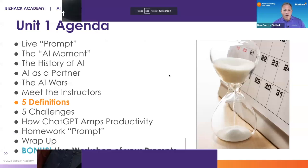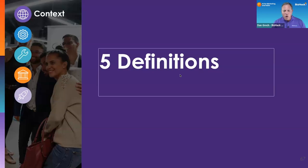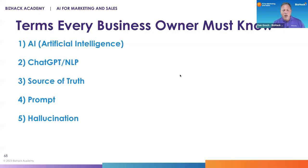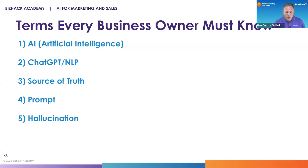We're going to talk about five definitions that every business owner needs to understand in order to be conversant in AI for their business and AI for marketing and sales. Those five terms are: AI — artificial intelligence — ChatGPT, source of truth, prompt, and hallucination.